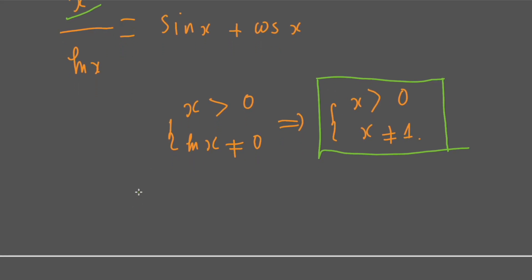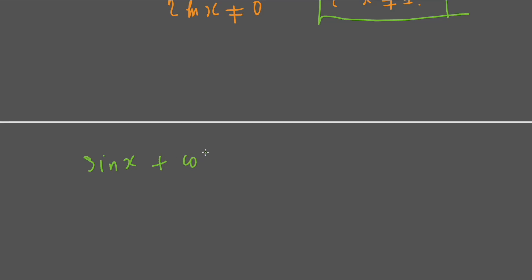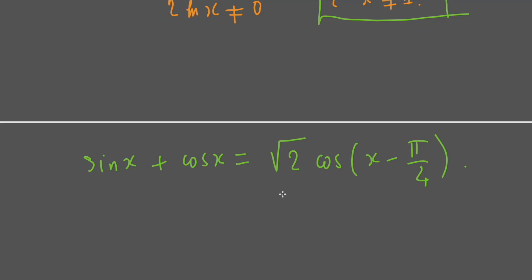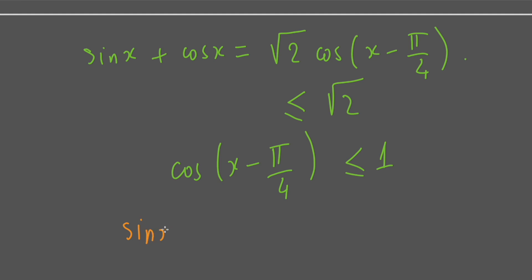On the right-hand side we have sin(x) plus cos(x), which equals square root of 2 multiplied by cos(x minus π/4). This means the expression on the right-hand side is smaller than or equal to square root of 2, because cos(x minus π/4) is at most 1, so sin(x) plus cos(x) is at most square root of 2.